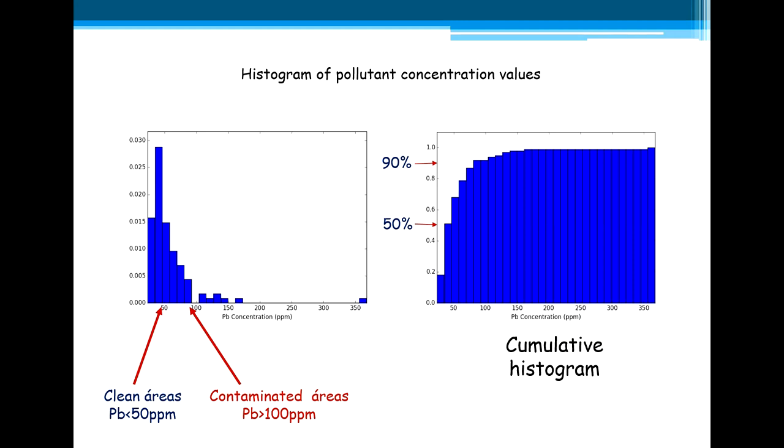But let's see a more clear example of the histogram. This is the histogram of our pollutant concentration, where we are interested in two classes. The clean area, the classes representing clean areas, which means all values with Pb concentration lower than 50 ppm, and the contaminated areas definitely needing remediation, which have those values with Pb greater than 100 ppm.